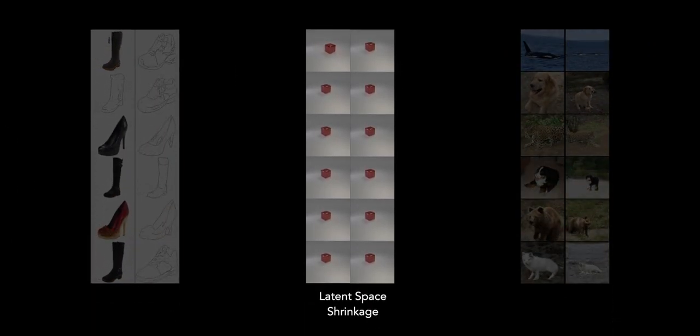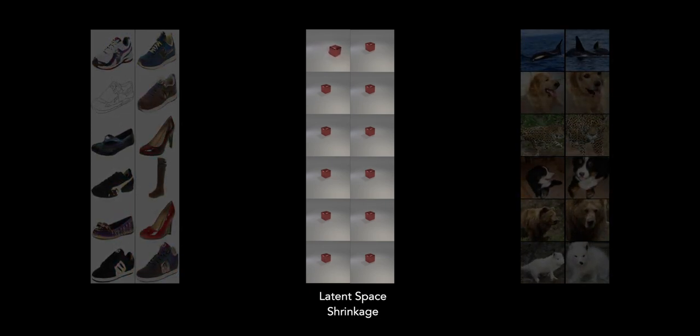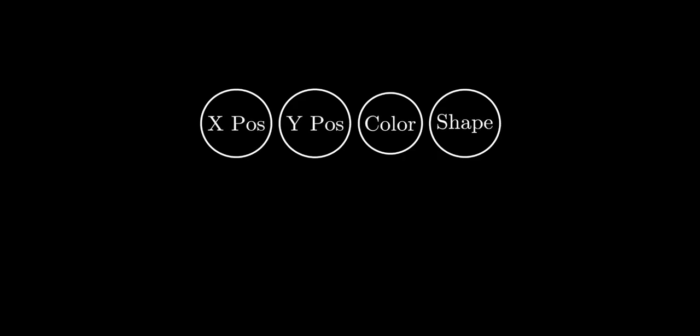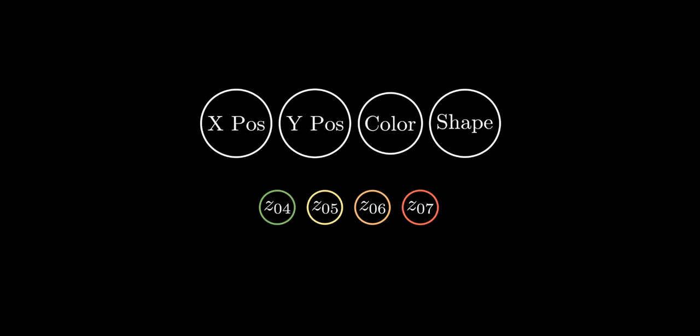Next we're going to move on to investigating what happens when we apply the Hessian penalty to over-parameterized latent spaces. In virtually all circumstances, we don't know the number of true factors of variation in our data, so our generative models are likely to be either over- or under-parameterized. For example, in this case we're using 12 z-components to model just four factors in our data. An ideal disentanglement algorithm should learn a sparse representation that only makes use of four factors.